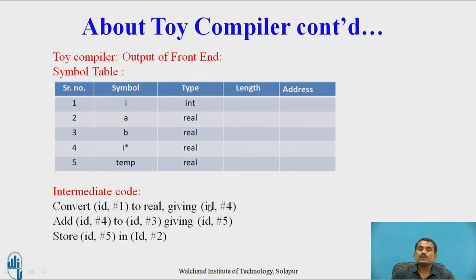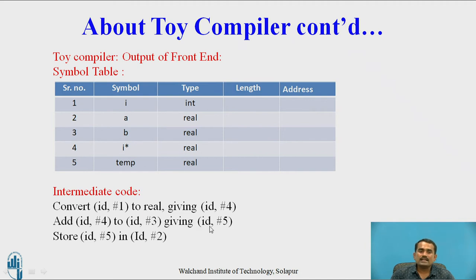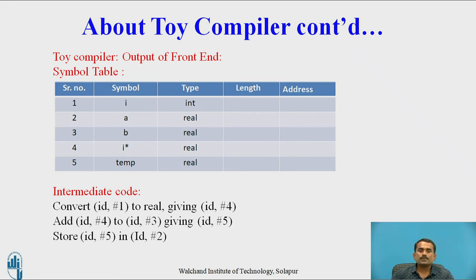After converting I to I-star, we add that to B. The next instruction is: add ID number 4 (the converted I-star) to ID number 3 (which is B), and store the result in ID number 5 — that is the temporary variable. Then, at the end, we store ID number 5 into ID number 2 (which is A). So the steps are: convert I to I-star, add to B, store in temporary variable, then store that data in A variable.